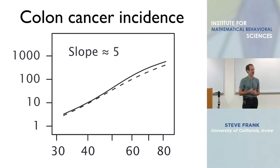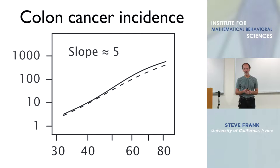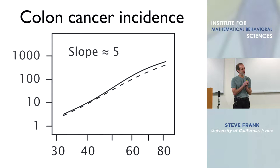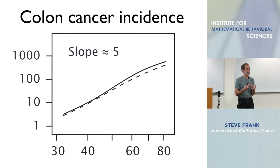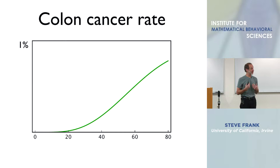Here are data for colorectal cancer in the United States — solid line for males, dashed line for females. The x-axis is age on a logarithmic scale; the y-axis is incidence on a logarithmic scale, measured as cases per 100,000 individuals per year. So 1,000 means 1,000 cases per 100,000 individuals — about 1%. The maximum rate gets close to 1%, and on this double-log plot we have nearly a straight line. I want to plot those data in a slightly different way to help understand the structure of the pattern.